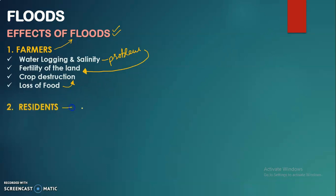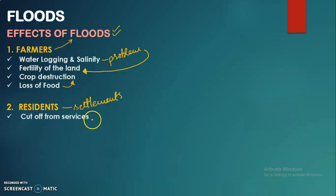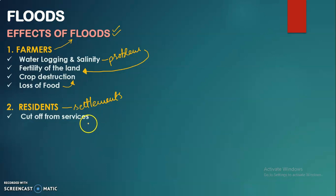The next group affected is residents — people living in settlements. First, they are cut off from services because floods damage road connectivity, so they cannot travel to jobs or other places. Second, mud houses and huts are not strong enough and have less resistance, so they get damaged more severely in flood situations.